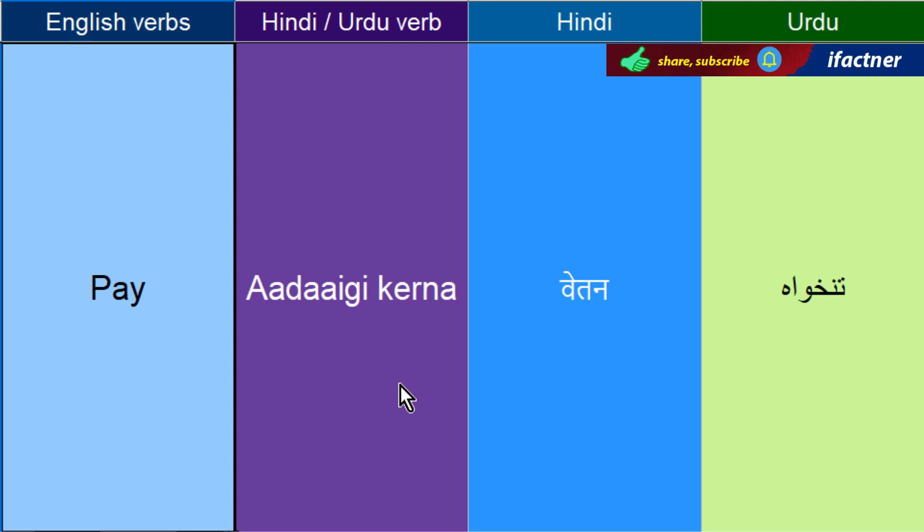Tenkhua dayne ko, koi cheez adaa kerne ko kehthay hain — Pay. Jahankne ko kehthay hain — Peep. Usi se peeping tom nikla hai — jo ayawin doosrho ki taraf jhankta rehthay, doosrhoon ke gharon mein.